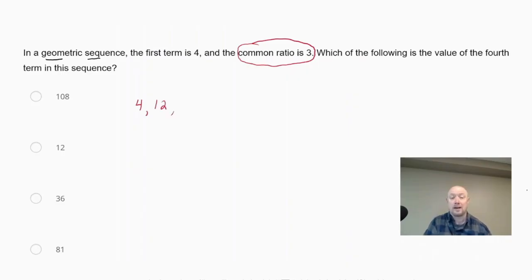The third term, we're going to multiply again by 3, and we're going to get 36. And then the fourth term, again, we're going to multiply by 3, and we're going to get 108.